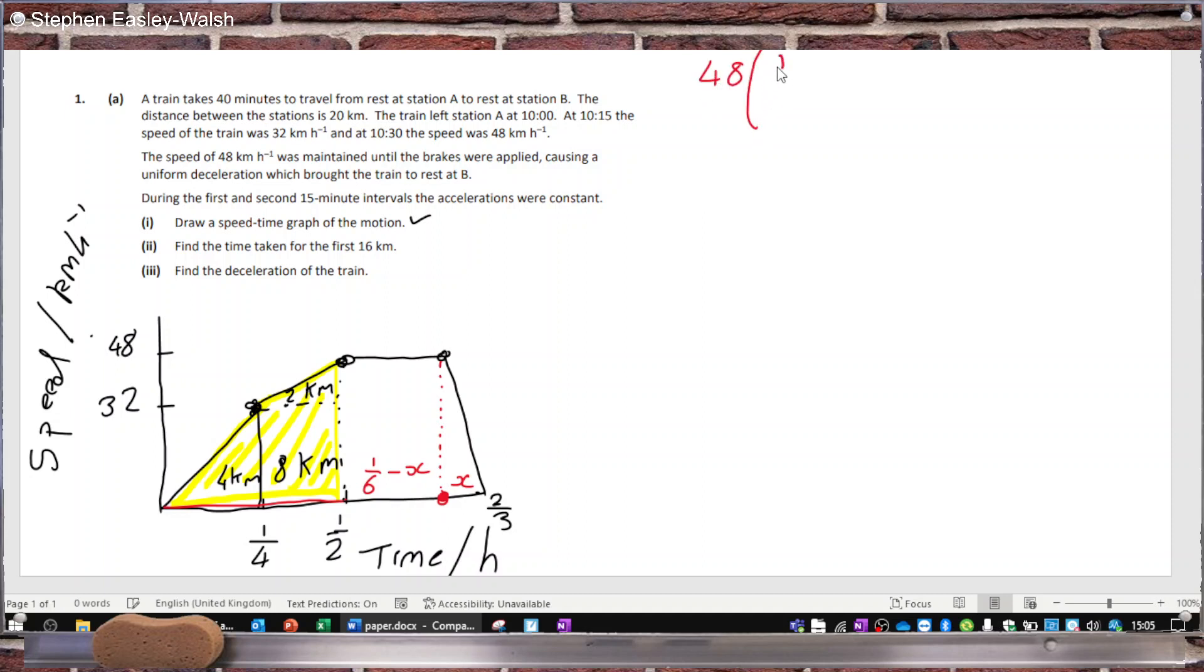48 times 1/6 minus x, plus a half x times 48, that should equal 6 kilometers. Okay, so that's going to be 8 minus 48x plus 24x equals 6. No x here, sorry, just 8. Okay, 24 minus 48, so that's negative 24x. If you take it to the right, it's 2, so x is 1/12.